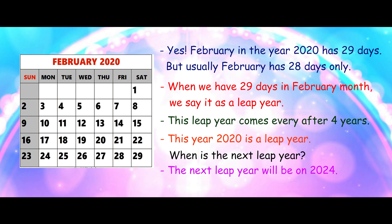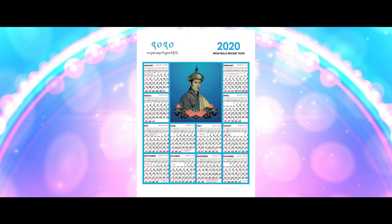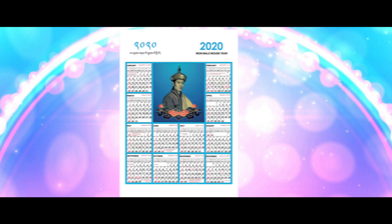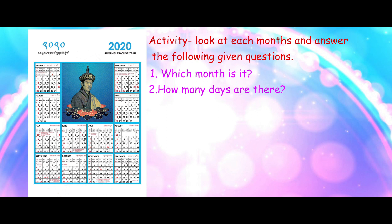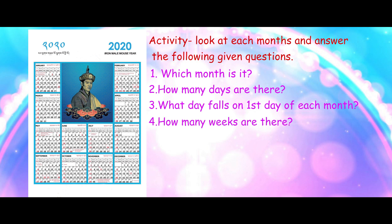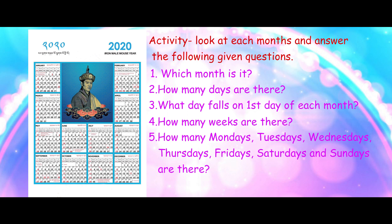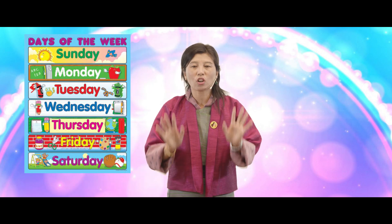Okay children, now look at the calendar again and solve these questions in your book. For each month of the year: number 1, write down which month it is; number 2, how many days are there; number 3, what day falls on the first day of each month; number 4, how many weeks are there; and number 5, count how many Mondays, Tuesdays, Wednesdays, Thursdays, Fridays, Saturdays, and Sundays are there in each month.